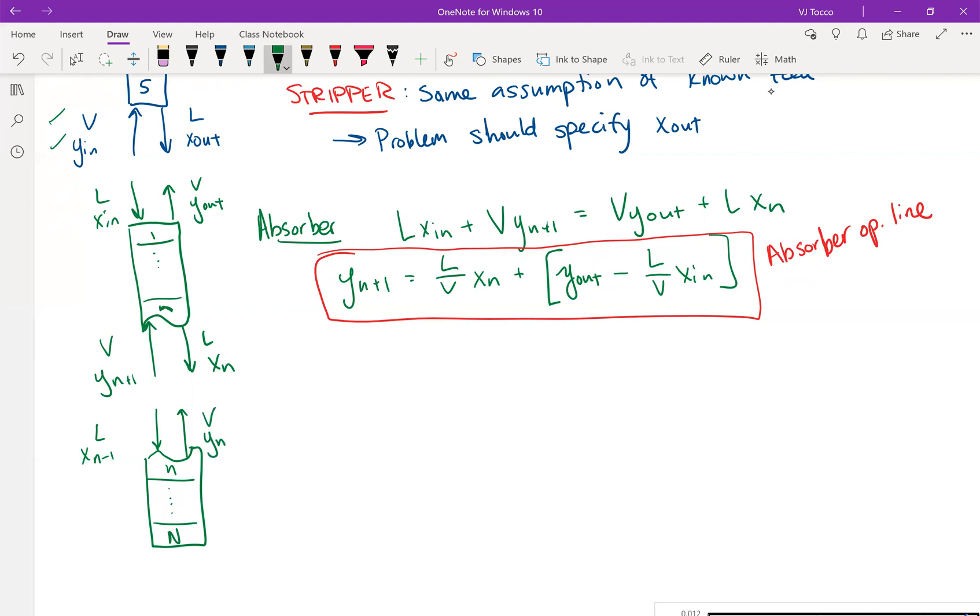So V, y_n and L, x_out, V, y_n. And this is again for a stripper because you assume that you know the bottom four variables as before. So the operating line here, do the material balance, V times y_n plus L times x_n minus one is equal to V times y_n plus L times x_out. Same thing, take the L x_out over to the other side and divide through by V in order to obtain an equation for y of n. And y of n is equal to L over V x_n minus one plus y_in minus L over V x_out.